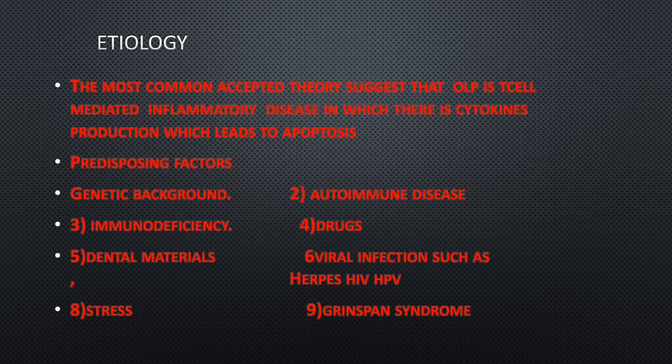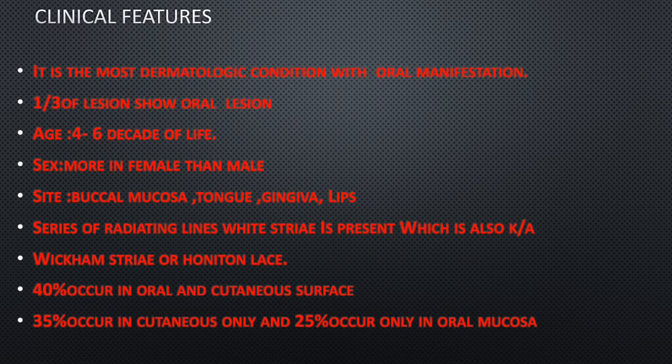Regarding clinical features, oral lichen planus is the most common dermatological condition with oral manifestation, occurring both in the skin and oral cavity. One third of the lesions have an oral component. It occurs most commonly at ages 40 to 60 years, and is more common in females than males, possibly due to higher stress levels in females. The sites affected include the buccal mucosa, tongue, gingiva, and lips.